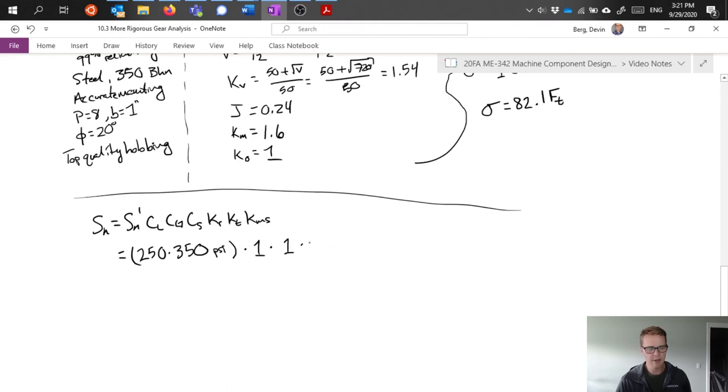Because the dimensional pitch is greater than five, that means that our CG is also one. CS surface factor, I would read this off of figure 8.13 and we'd get 0.66. Reliability factor from table 15.3, 99% reliability gives us 0.814. We don't have anything about high temperature, so that gives us a temperature correction of one. And this is not given as an idler gear, which gives us a KMS of 1.4.